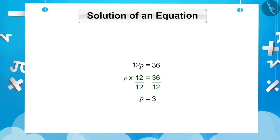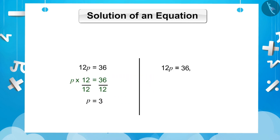Let's check whether the solution is correct or not. Substituting P is equal to 3 in the LHS of the equation, we get 36, which is equal to the RHS.